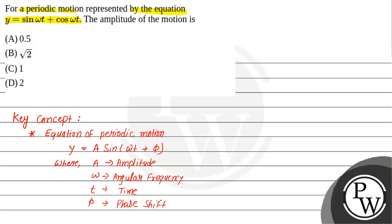The second concept we will use is the trigonometry formula: sin(a + b) equals sin(a)cos(b) plus cos(a)sin(b).